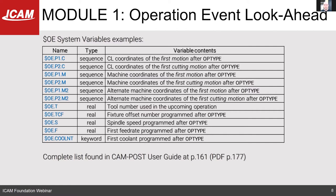Those are examples of the various system variables available to you. For example, you have the tool number used for that operation, what the spindle speed will be after the opt-type, and what's your first cutting motion or first motion. If you want a complete list, it is available in the Campos user guide on page 161, or page 177 if you're using the PDF format.